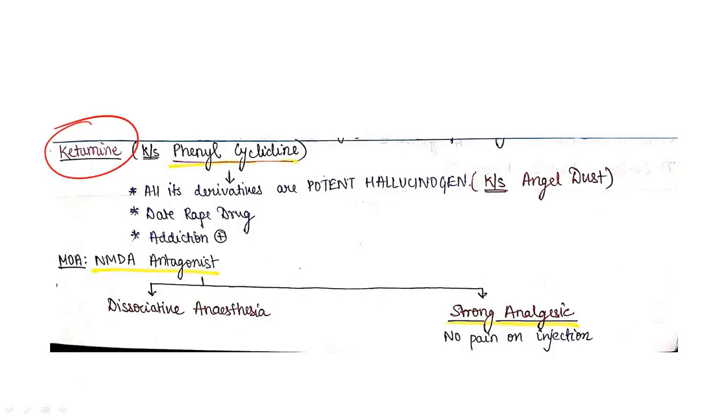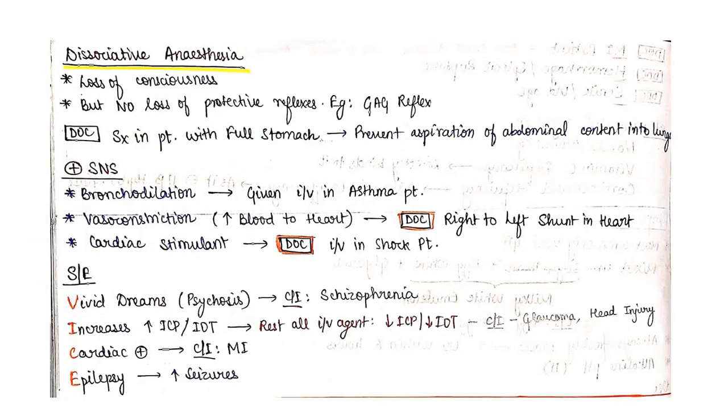Ketamine - all its derivatives are potent hallucinogens. Also known as date rape drug and has addiction potential. Mechanism of action: NMDA antagonist. It is dissociative anesthetic and strong analgesic, so no pain on injection.